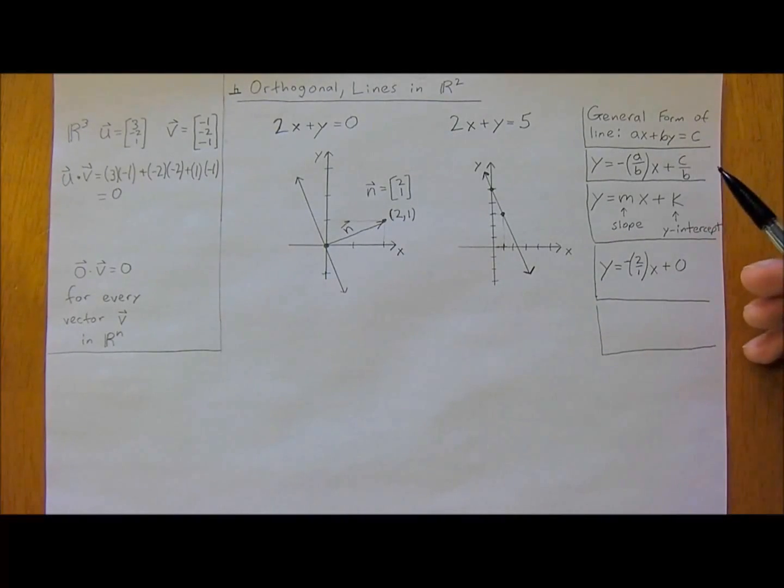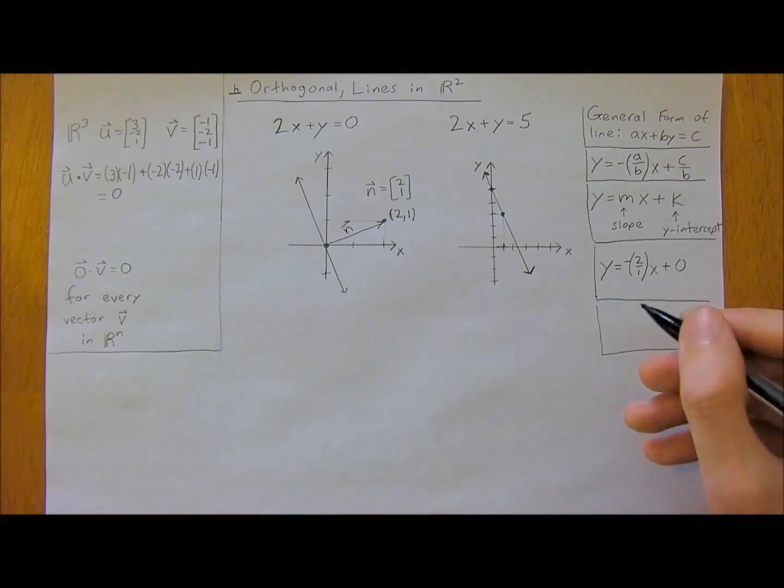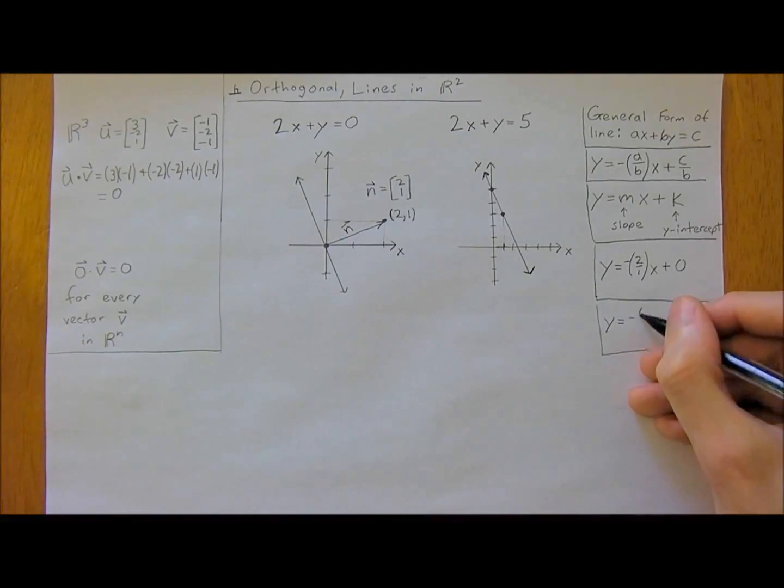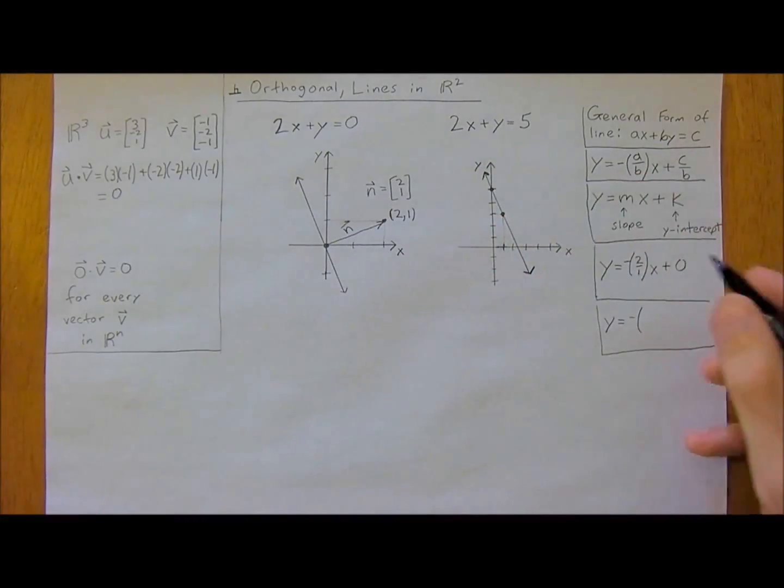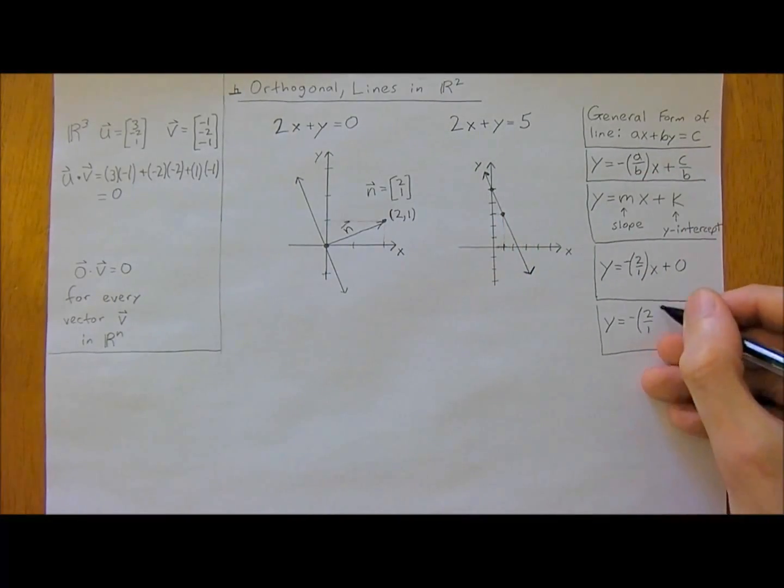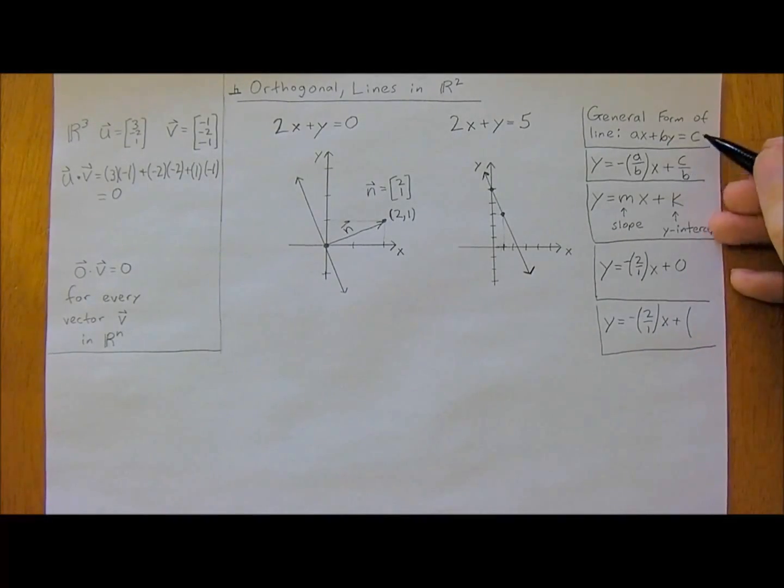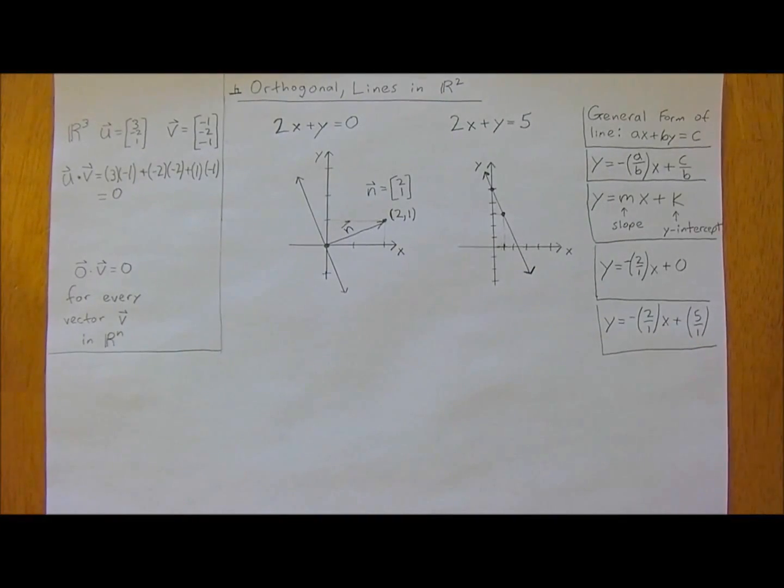That's general form for a line in R². Let's do this other one here now as well. Y is equal to negative A over B, so 2 over 1, it's got the same slope, plus C divided by B, so 5 divided by 1. And that's pretty much it. It's pretty straightforward.